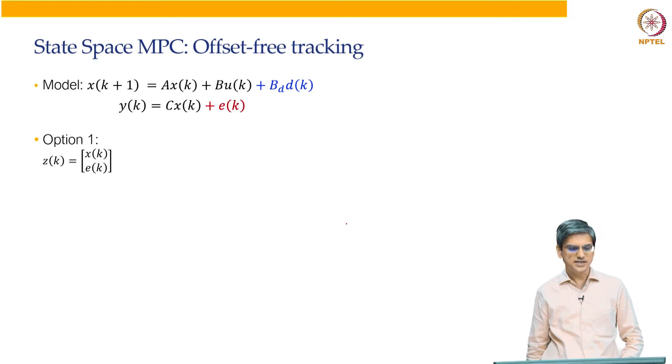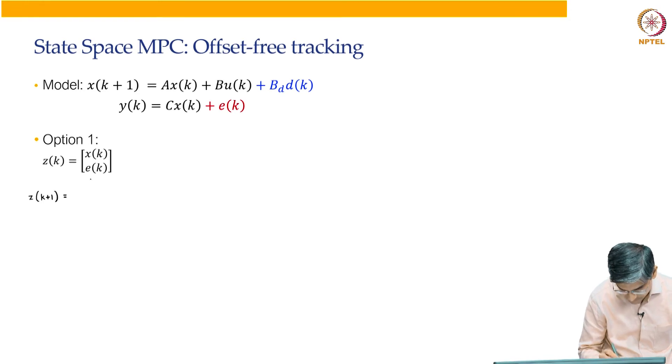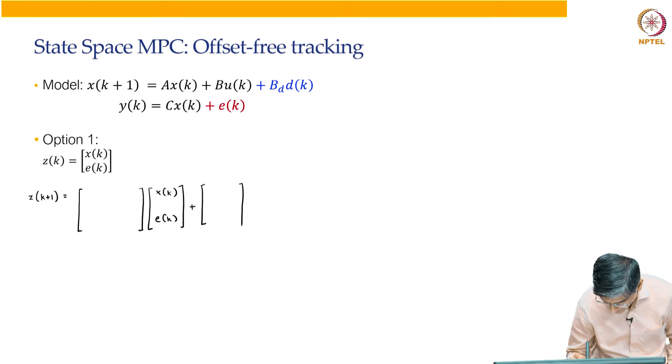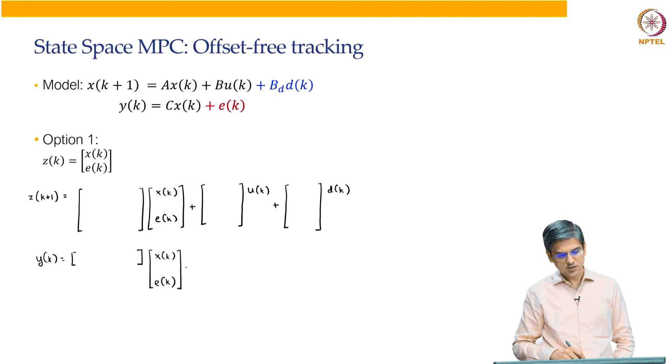So, that is essentially what is required in order to do offset free tracking. What are the options that are available for us? We have said we need to augment the model so that it comes back into that same factor. Option number one is to write zk as xk ek. So, this is what our first option is going to look like.